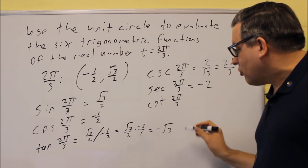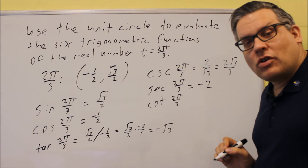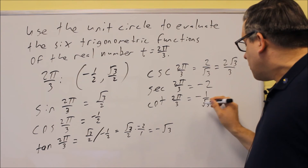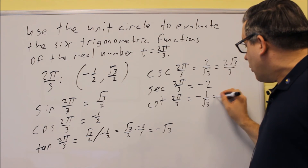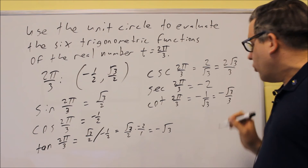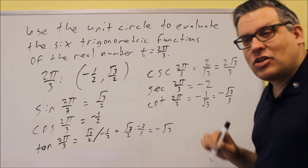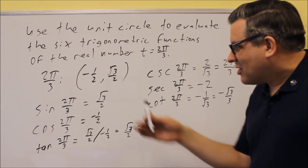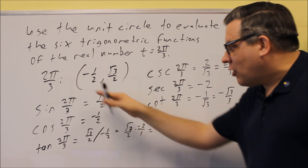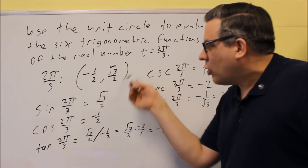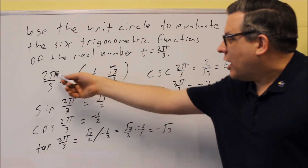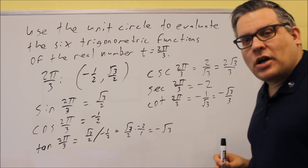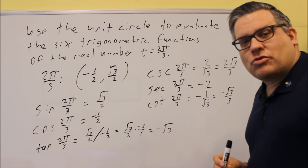For cotangent of 2π over 3, it's the reciprocal of negative square root of 3, so that's negative 1 over root 3. Don't forget about the sign. If you rationalize it, you get negative root 3 over 3, and that's the exact value. So if you have a unit circle, all you need is the coordinate at that angle — go to 2π over 3, see what the coordinate is, and then get all the other values using the definitions for all six trig functions.